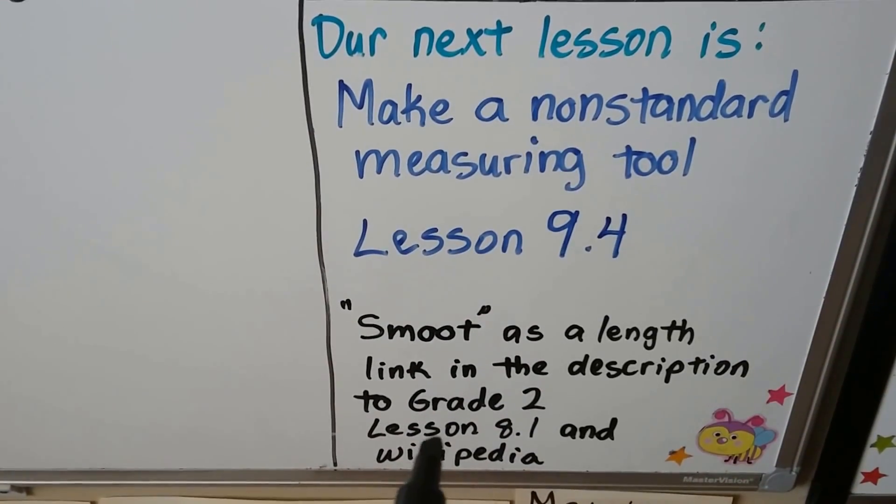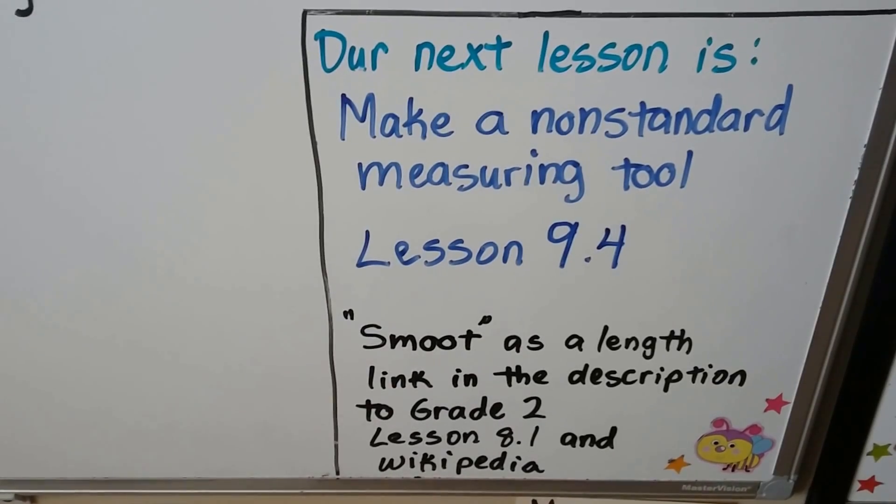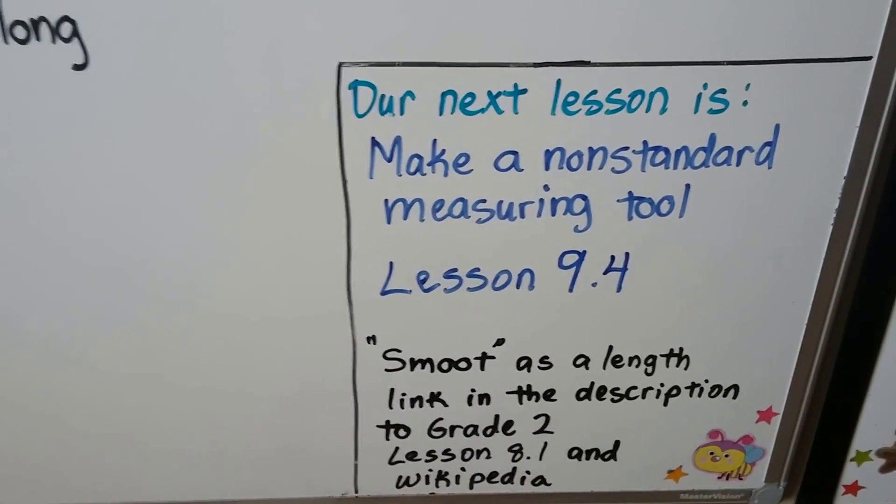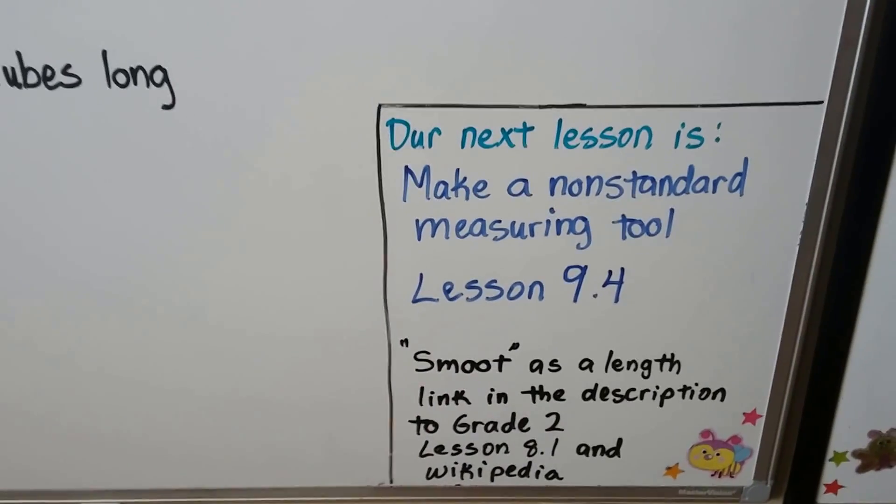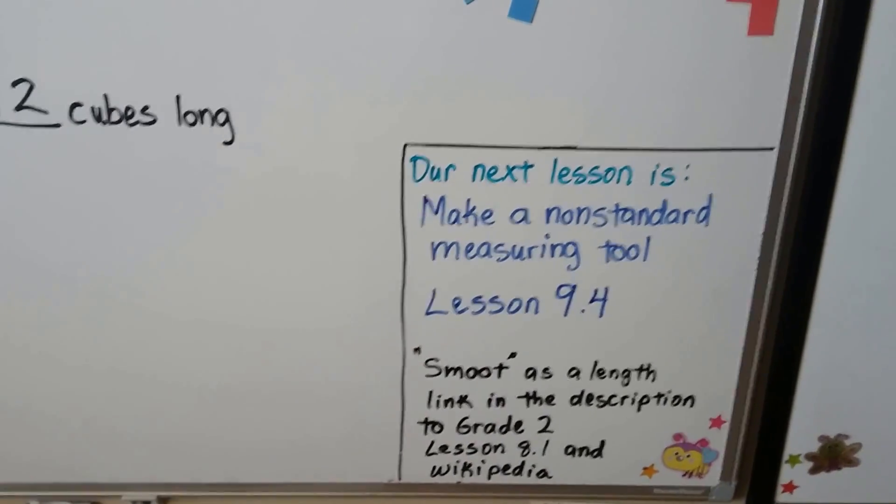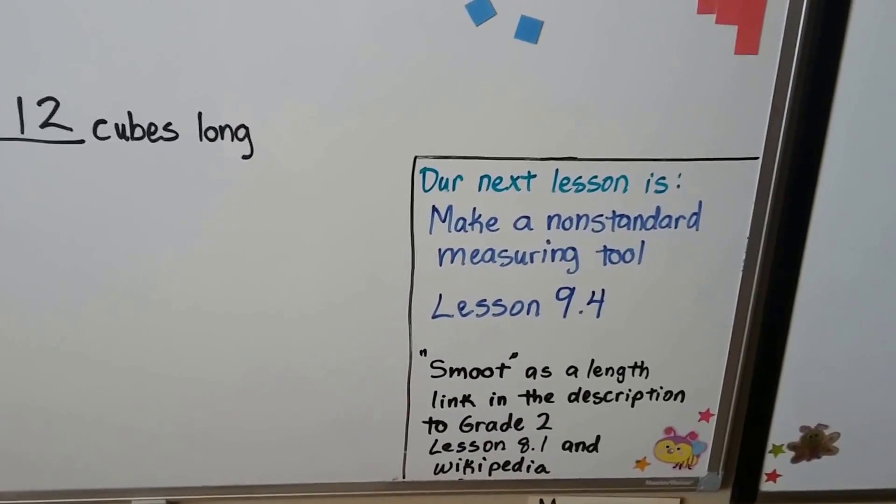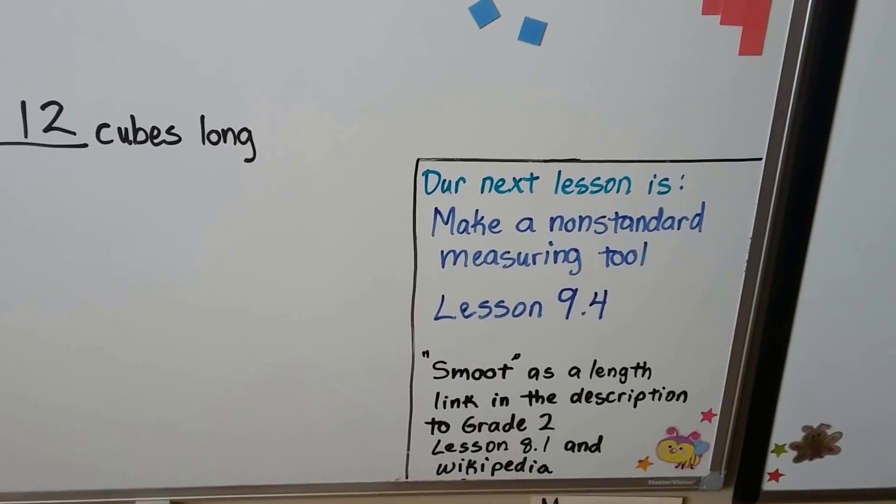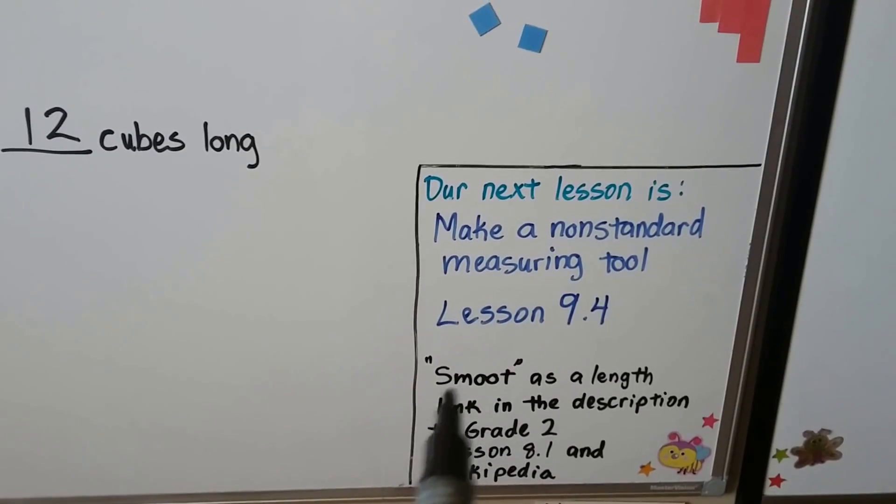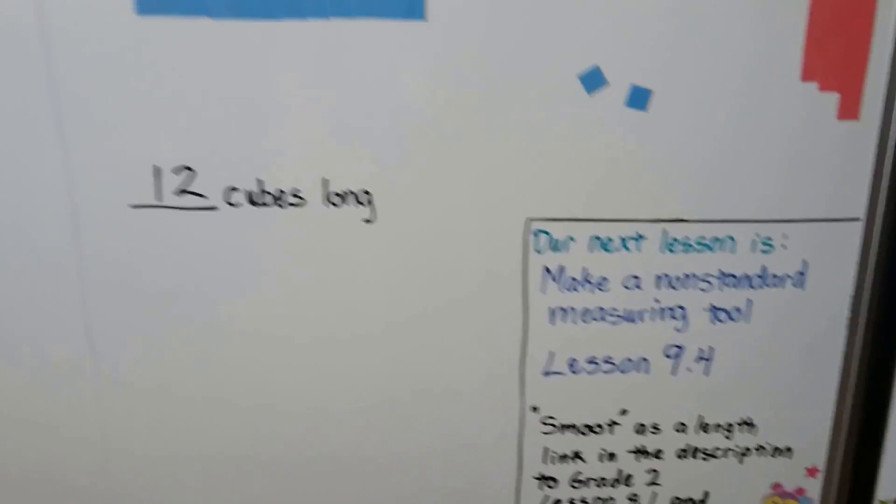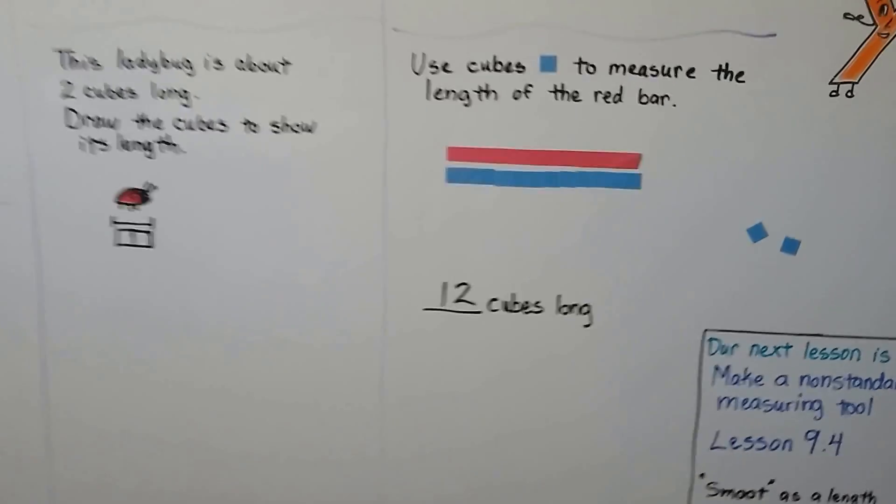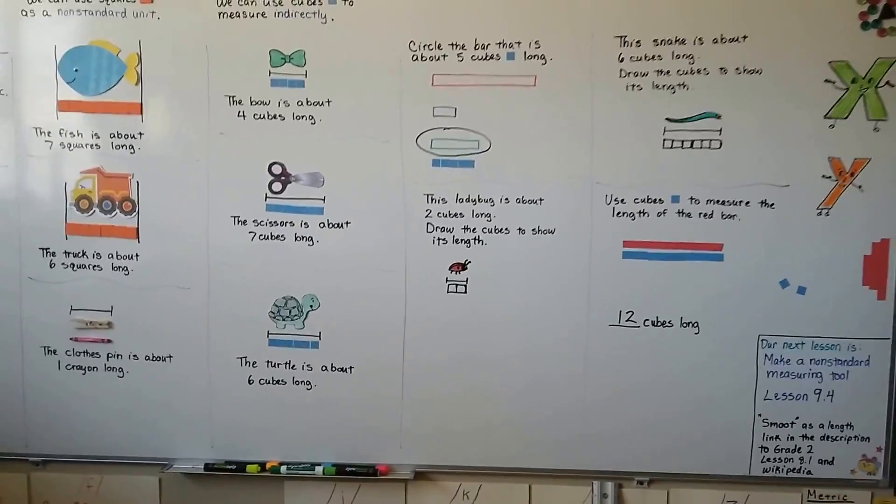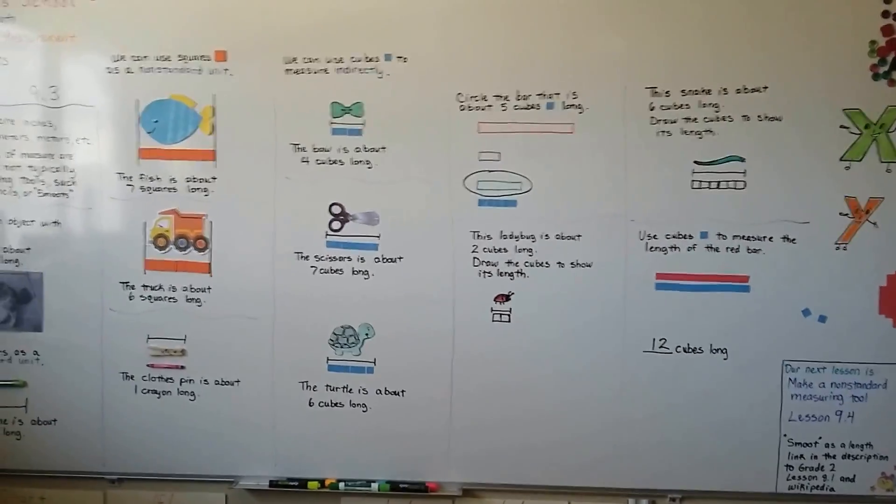And I talk about Smoots as a length for measuring. And there'll be a link to a Wikipedia article about Smoots. Oliver Smoot was a man who was in college and his friends made him lay down on a bridge and they measured the bridge by how many Oliver Smoots it took. That's his last name. Isn't that silly?